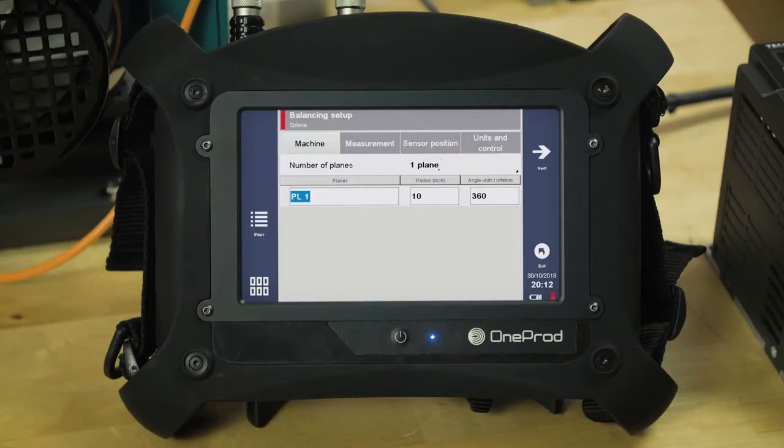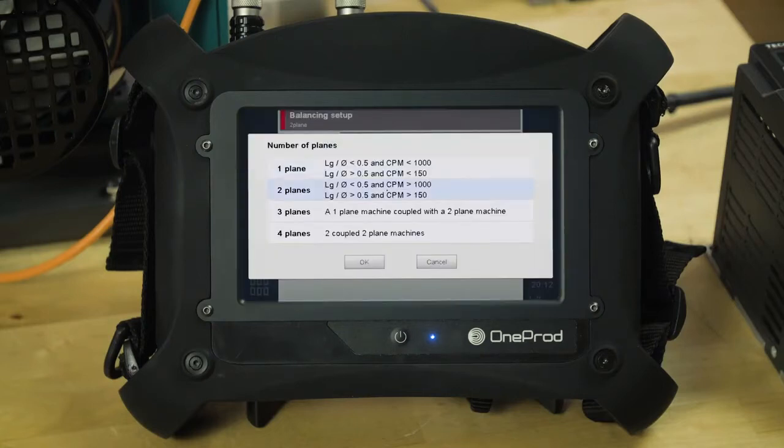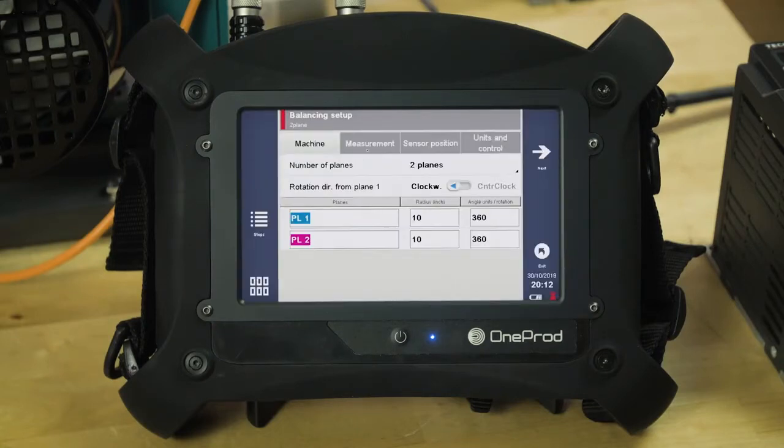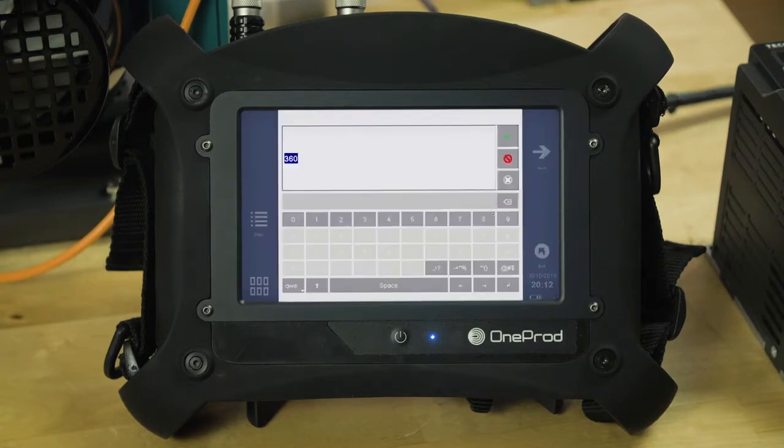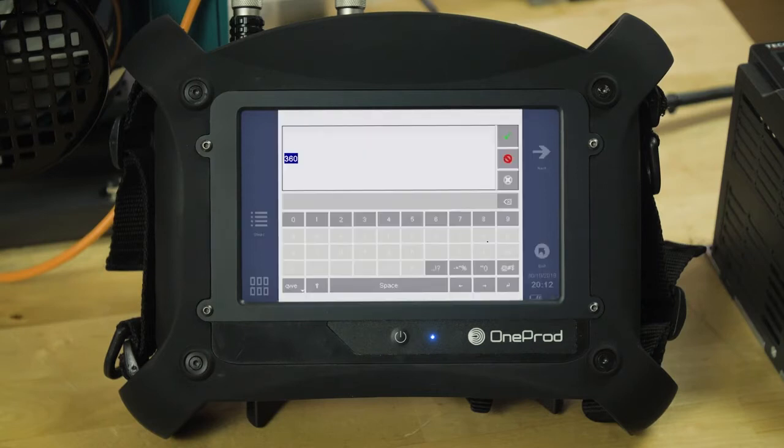We've saved another balance job, and for the number of planes, we'll select two. In our angle units, we just have an additional plane to work with. We'll update both to the number of holes or blades where the correction weights will go. The screen difference is because you have a second plane noted now.